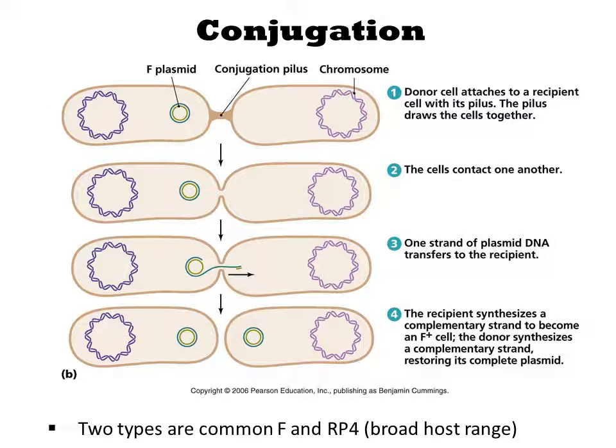There are two commonly used conjugation systems in E. coli: F-plasmid and RP4. F-plasmid is E. coli specific, but RP4 enables E. coli to mate with other bacteria and even yeasts.